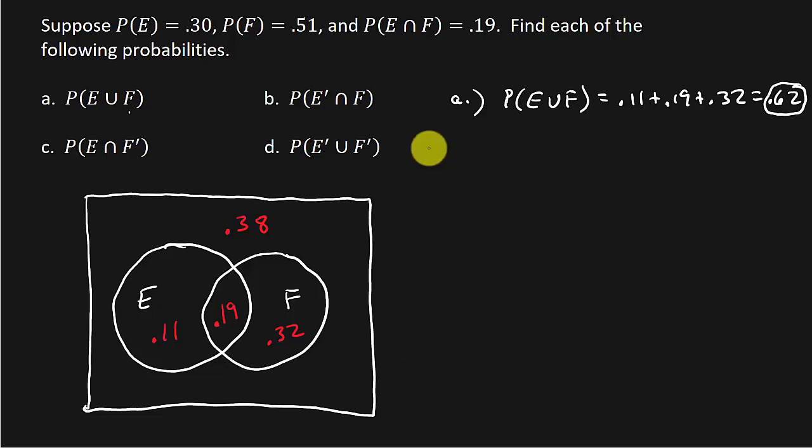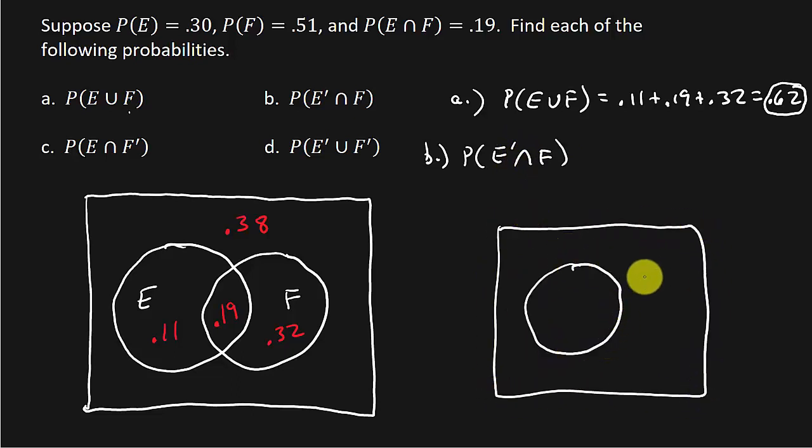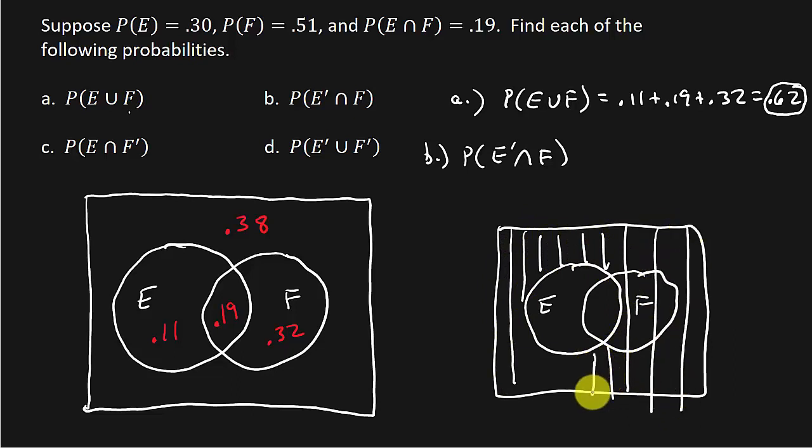So let's do B. That's the probability of E prime intersect F. So once again, let's draw the circles. There's E. There's F. Now, let's shade in E prime with vertical lines.